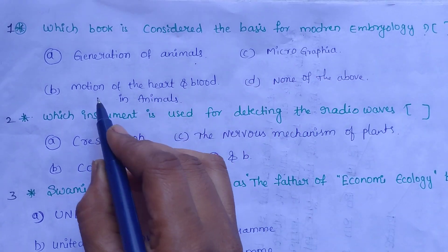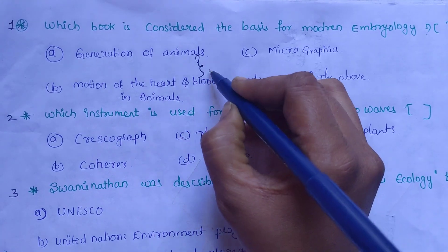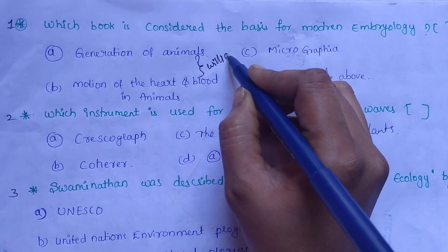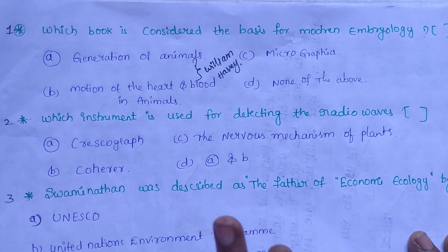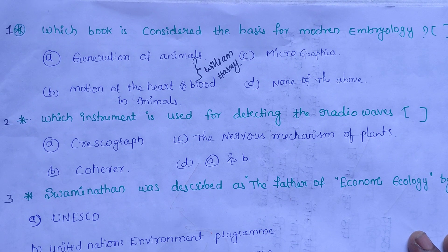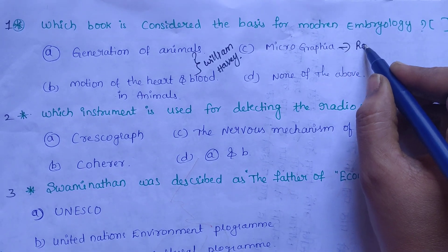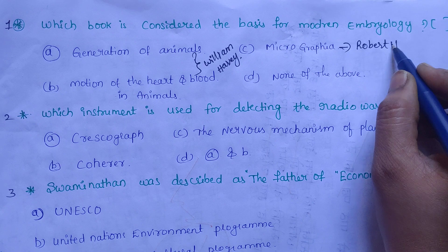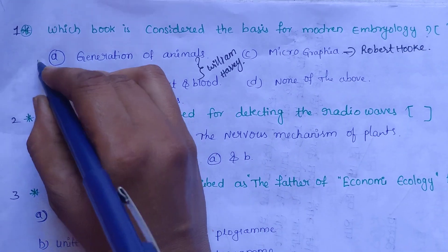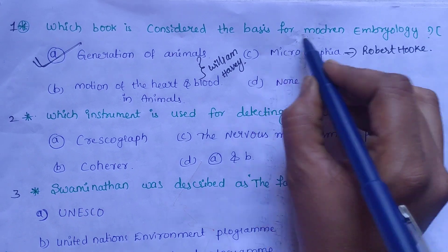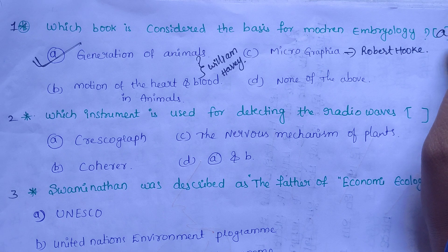Generation of Animals and Motion of the Heart and Blood in Animals were both written by William Harvey. Micrographia was written by Robert Hooke. The Generation of Animals is the book that is the basis for modern embryology. So our correct option is Option A.